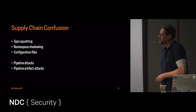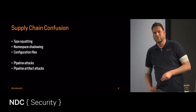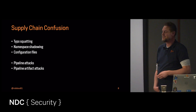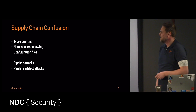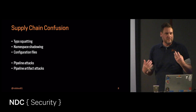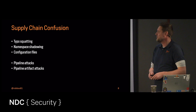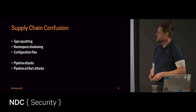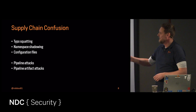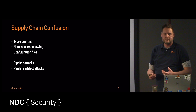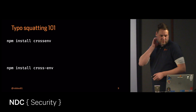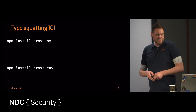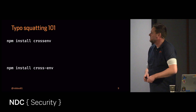Has anyone heard about supply chain confusion attacks? For those who haven't, I want to go over some of these. This is one of the simplest ones we see: typosquatting, namespace shadowing, and configuration file attacks. From my DevOps perspective, the pipeline attacks are also very important. On typosquatting — who already knows the difference between these two packages? This is a classic example from a couple of years back.